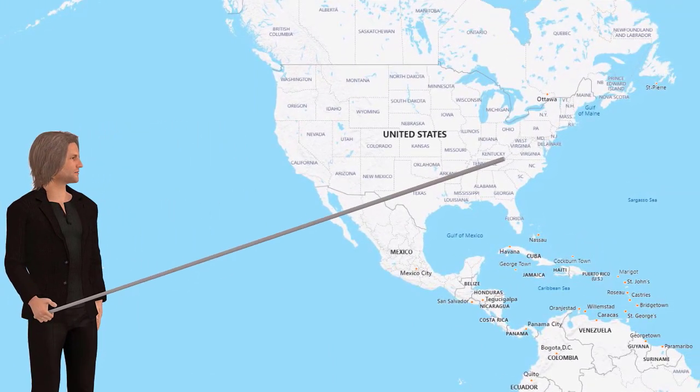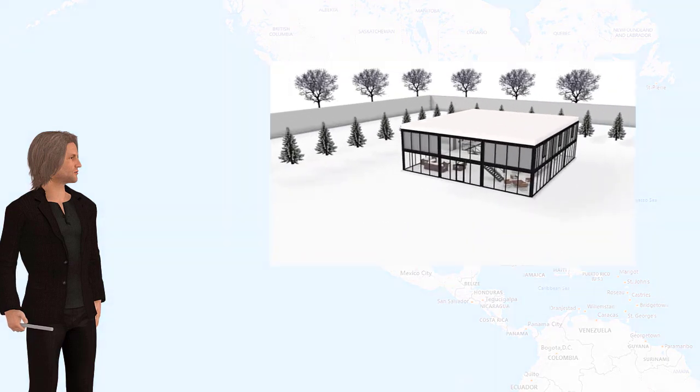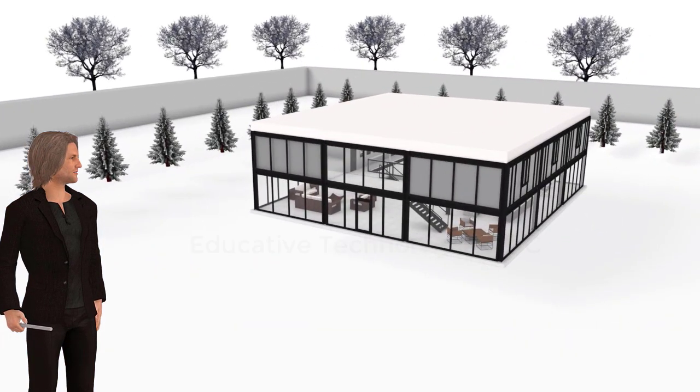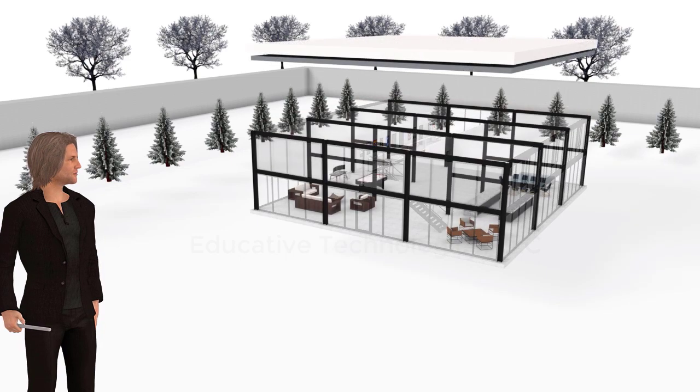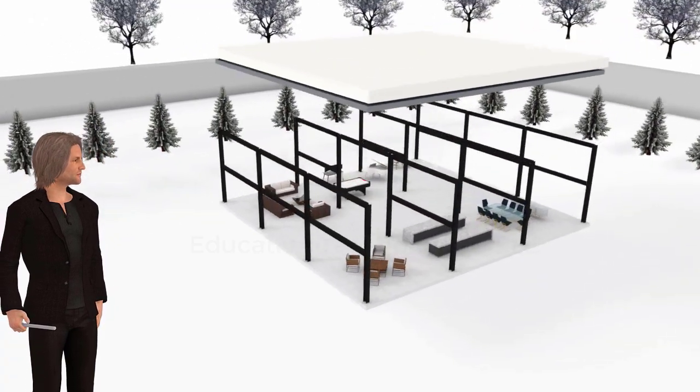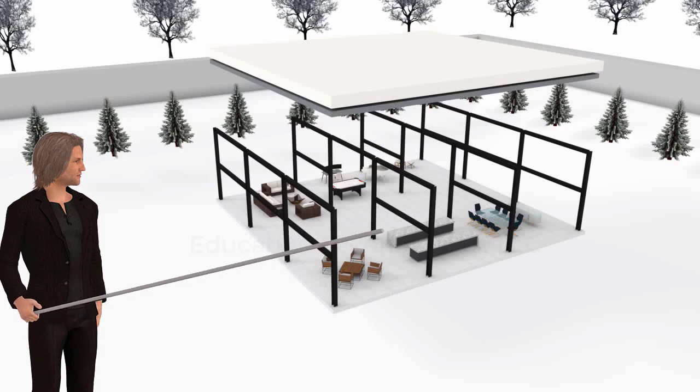Consider a house located in the northeast region of the United States, where snow could deposit a significant amount of load on the roof of the structure. As you can see, the skeleton of the house consists of four parallel frames. Let us analyze one of the interior frames affected by the snow load.